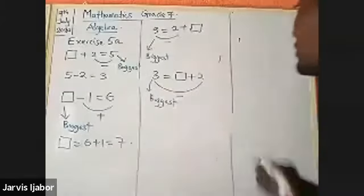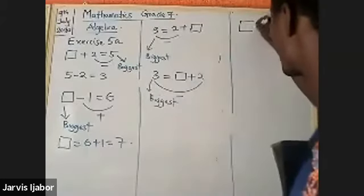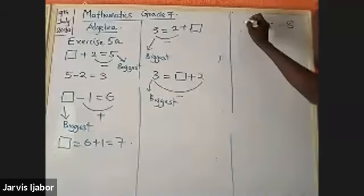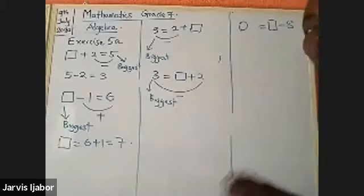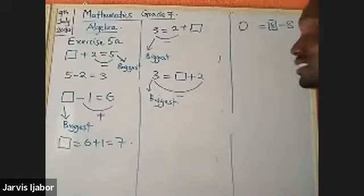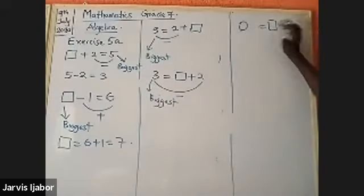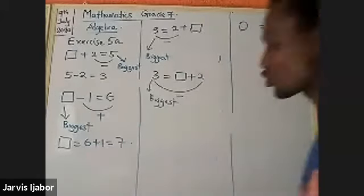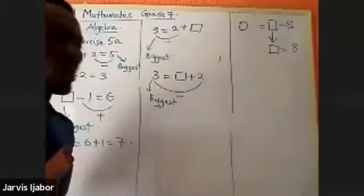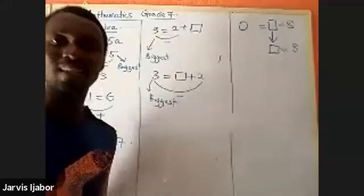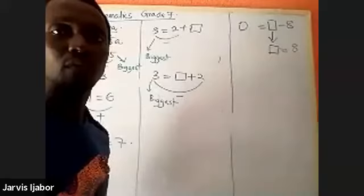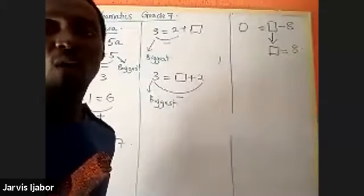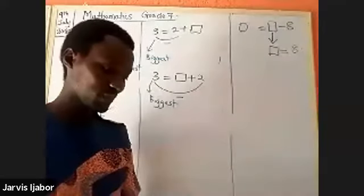Look at this: zero equals box minus eight. Without thinking, box is equal to eight. The only way you get zero when you subtract is when both numbers are identical. We've now done up to question sixty.